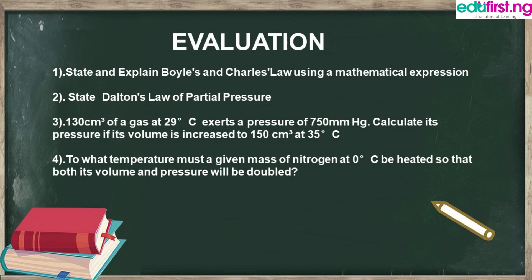Practice questions: (1) State and explain Boyle's and Charles' Law using a mathematical expression. (2) State Dalton's Law of Partial Pressure. (3) 130 cm³ of a gas at 29°C exerts a pressure of 750 mmHg — calculate its pressure if its volume is increased to 150 cm³ at 35°C. List out parameters, identify what is missing, and find the applicable formula. (4) Brain teaser: to what temperature must a given mass of nitrogen at 0°C be heated so that both its volume and pressure are doubled?